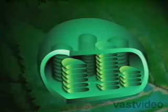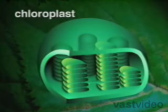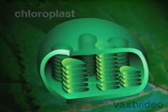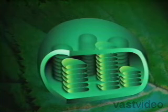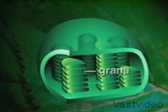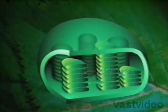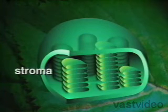Photosynthesis takes place inside the chloroplasts of green plant cells. It occurs in two stages. In the first stage, the light reactions take place in the thylakoid membranes of the grana. While in the second stage, the dark reactions take place inside the liquid stroma.